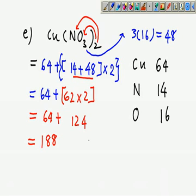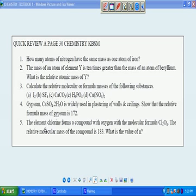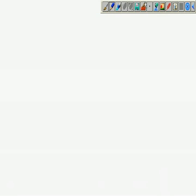Number 4. Gypsum CaSO4·2H2O is widely used in plastering of walls and ceilings. Show that the relative molecular formula mass of gypsum is 172. Let's prove that it is 172. Let's memorize first CaSO4·2H2O. So now let's write the formula first, CaSO4·2H2O. Do not be scared by this dot. This is just one of the chemical names for hydrated compound.